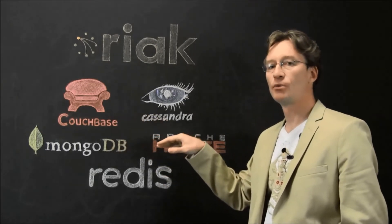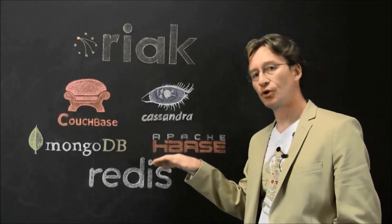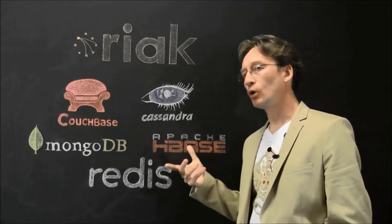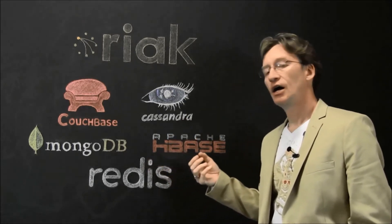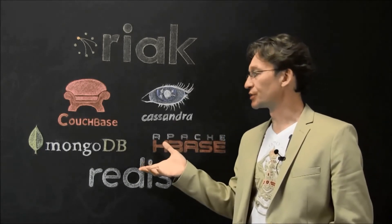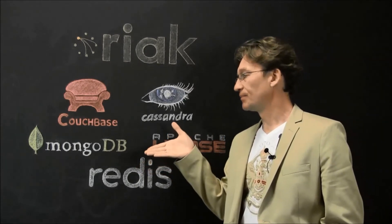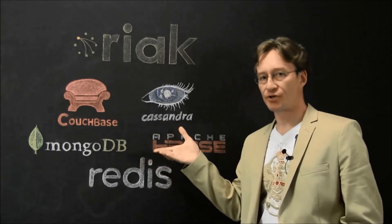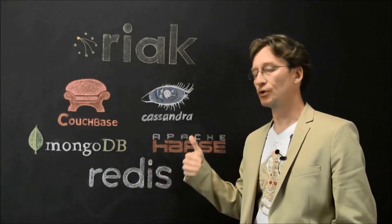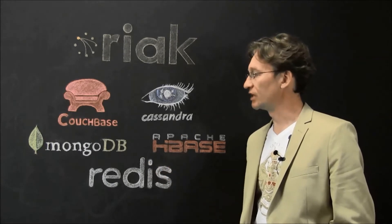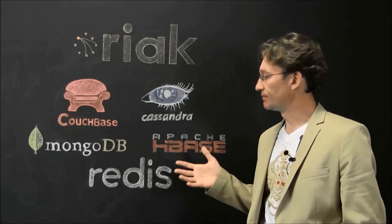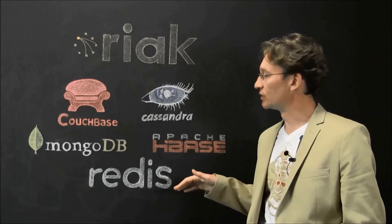Couchbase and MongoDB are more document stores and are a little bit more like relational technologies, but they let developers manage their data in a more structured way without forcing a lot of data modeling in advance — much more flexible on the schema.